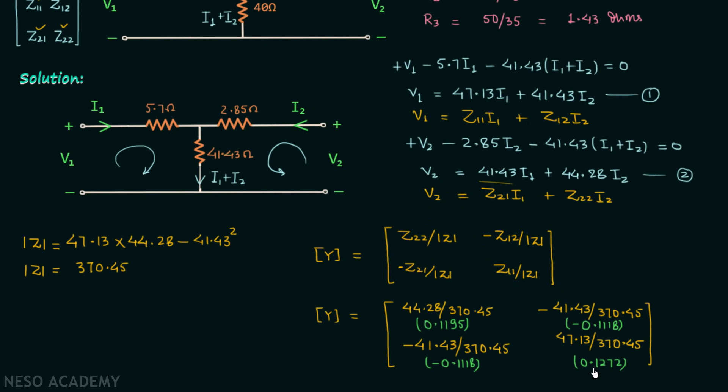In this way we have obtained all four parameters of the admittance matrix, and this is our final answer.